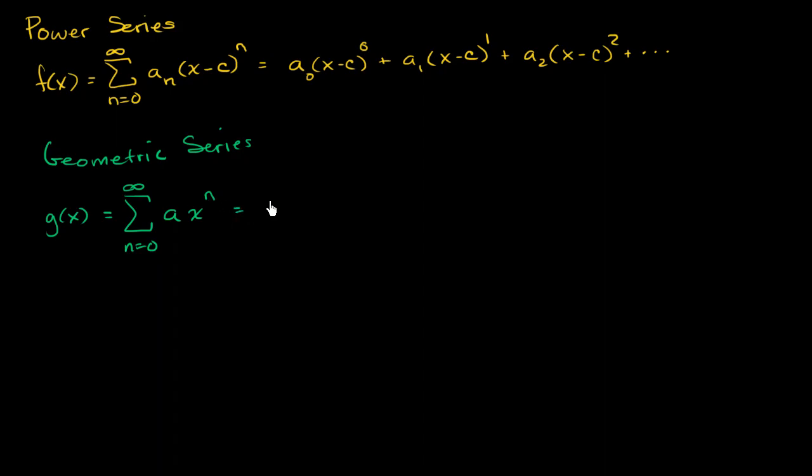And we can expand it out. This is a times x to the 0, which is just going to be a, plus a times x to the first, plus a times x squared. And we just go on and on and on forever.